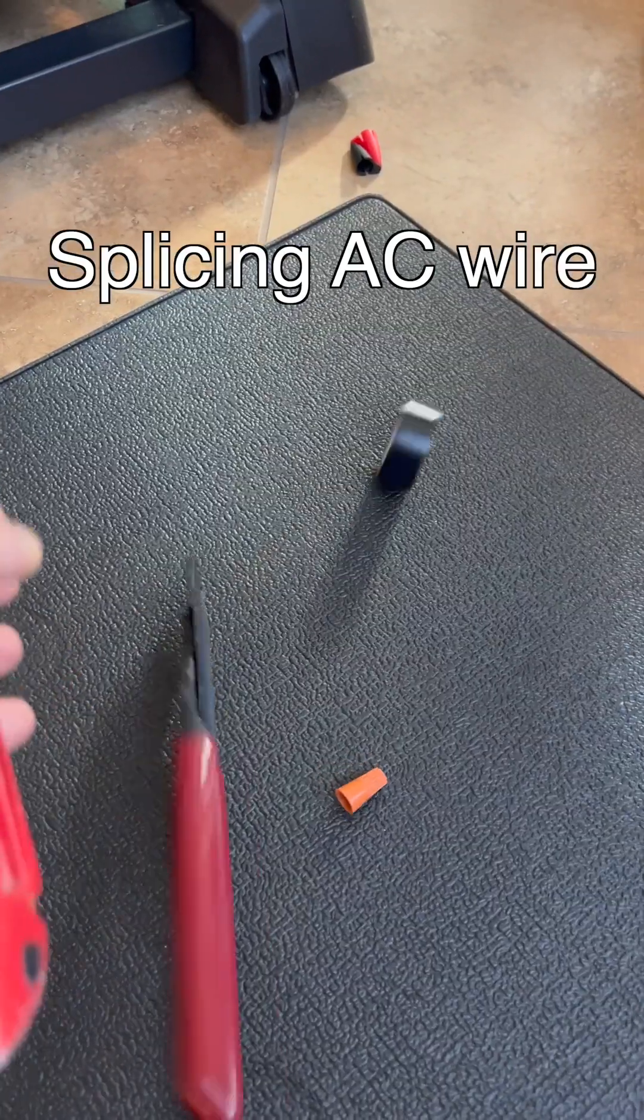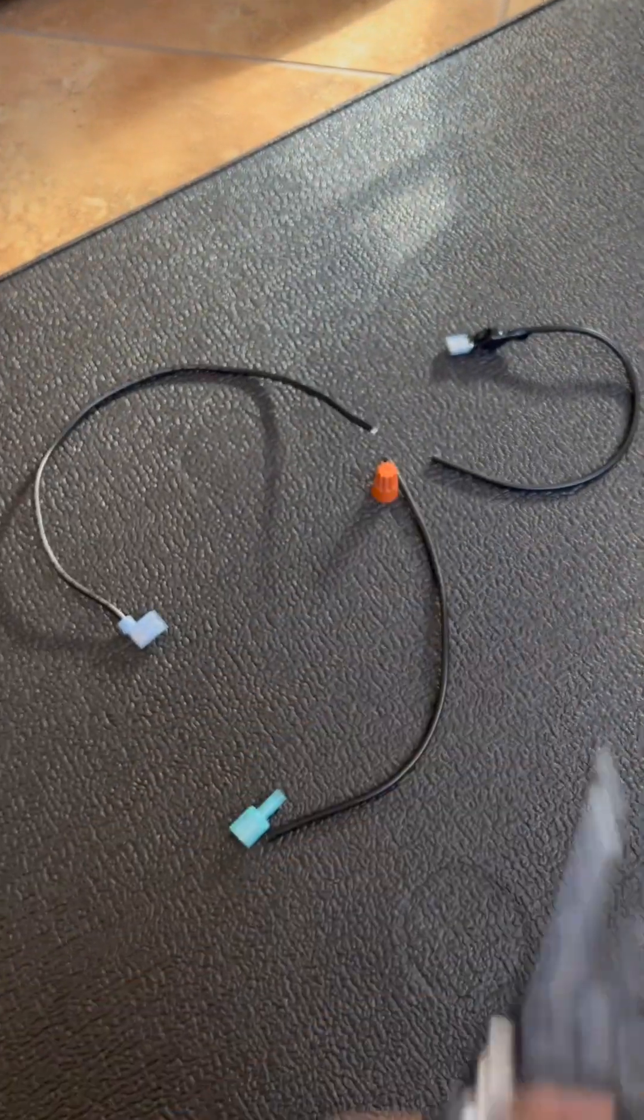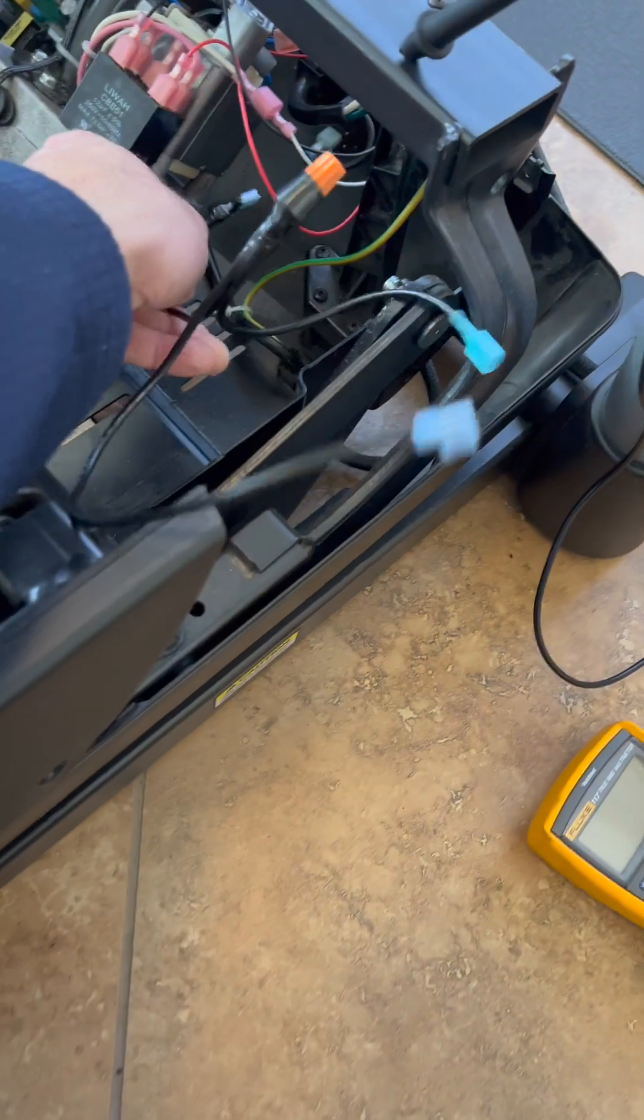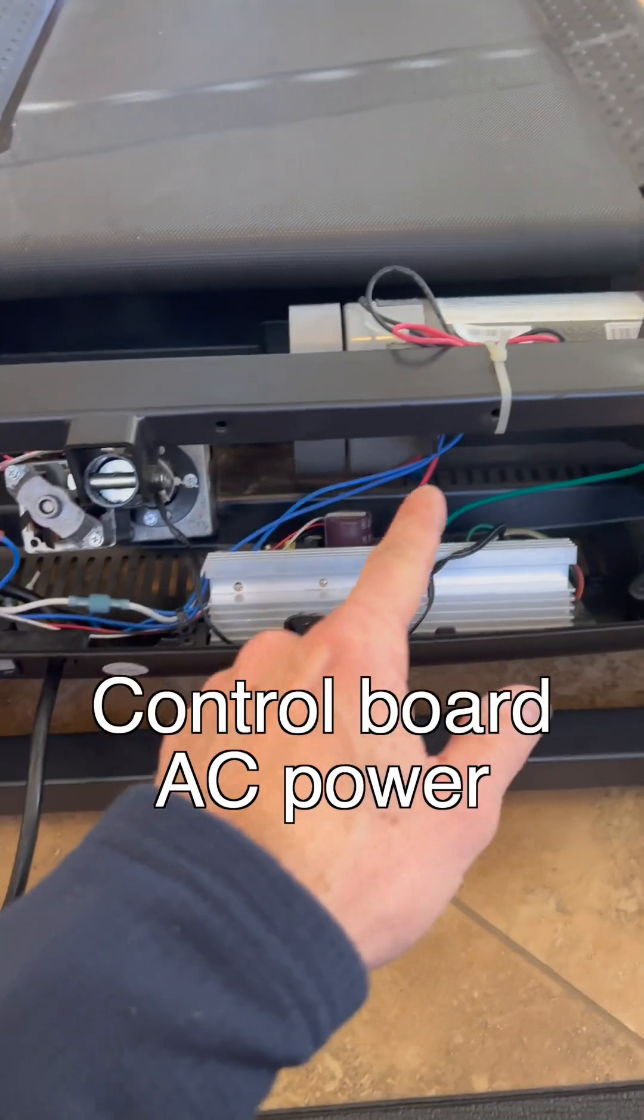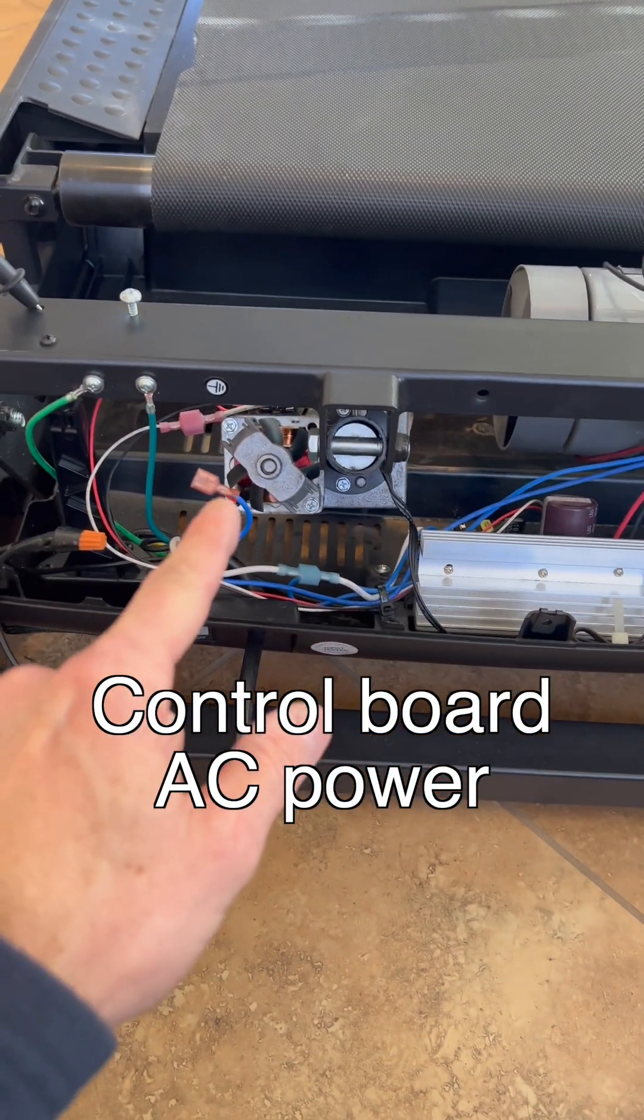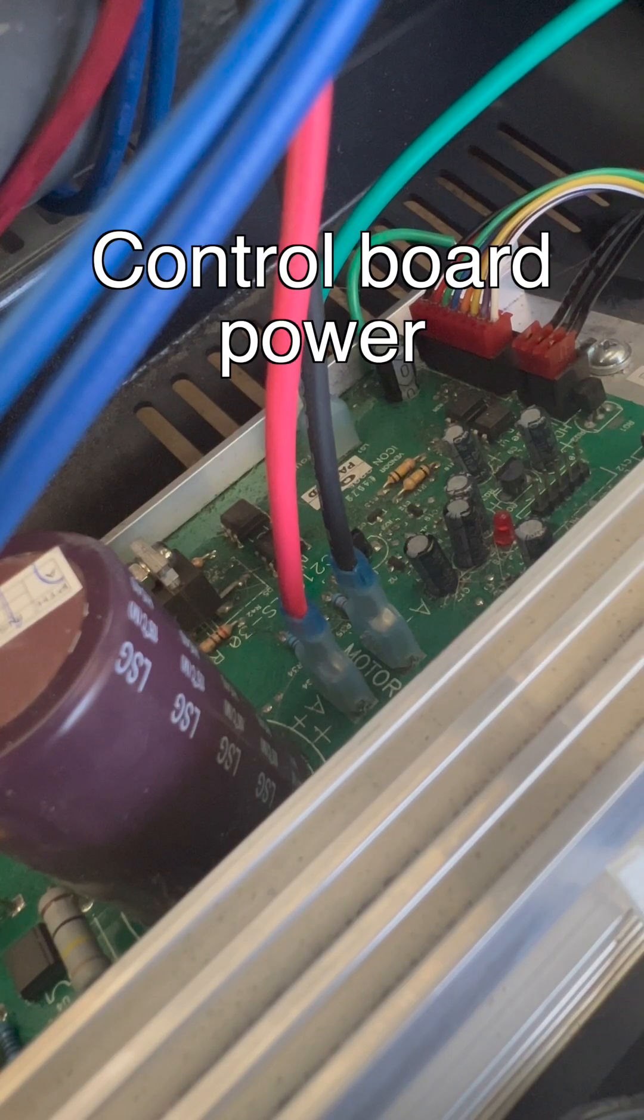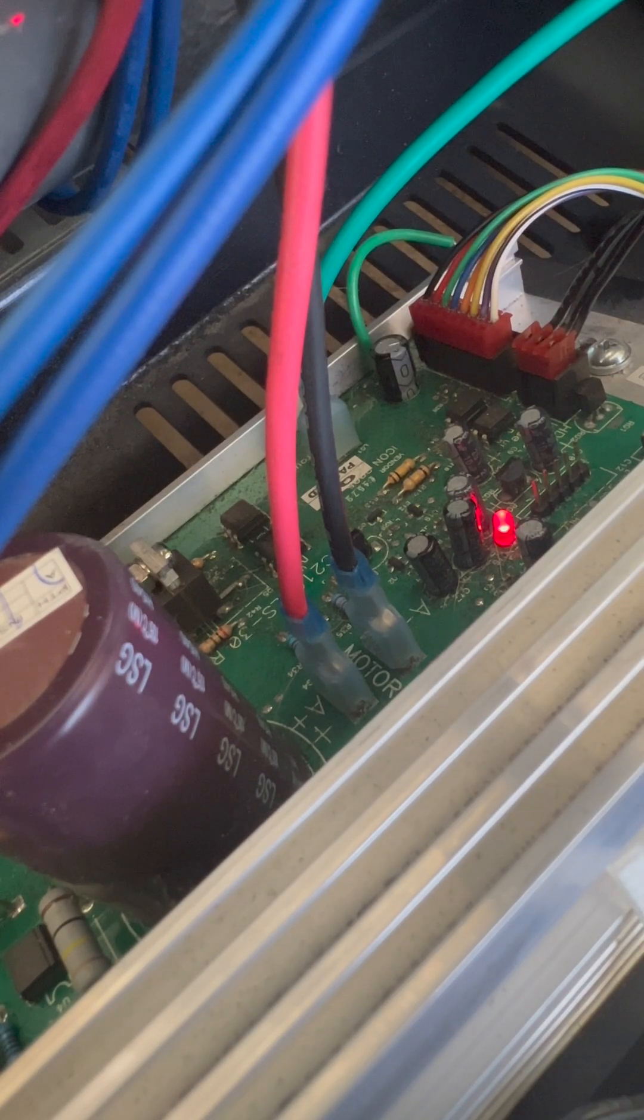Now I get to work splicing some AC wire. I need a hot leg and I need to tap into the current power switch. The feed goes to the MC2100 control board so I need to resupply power to that. Make sure you test it. A solid red light means it's functioning but not receiving a speed signal.